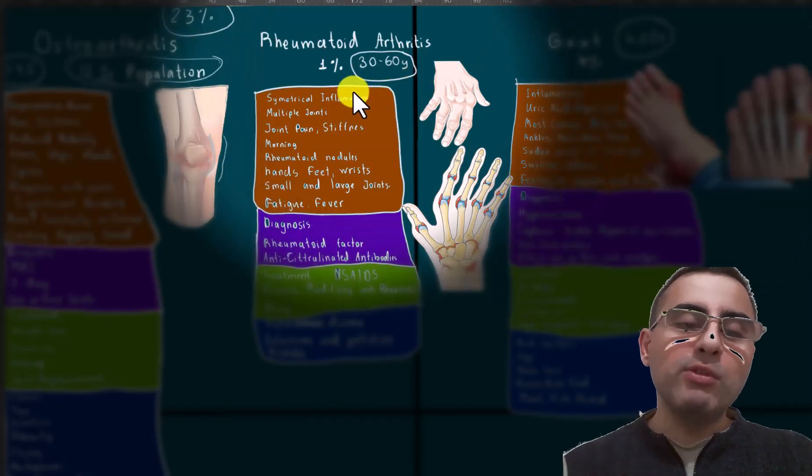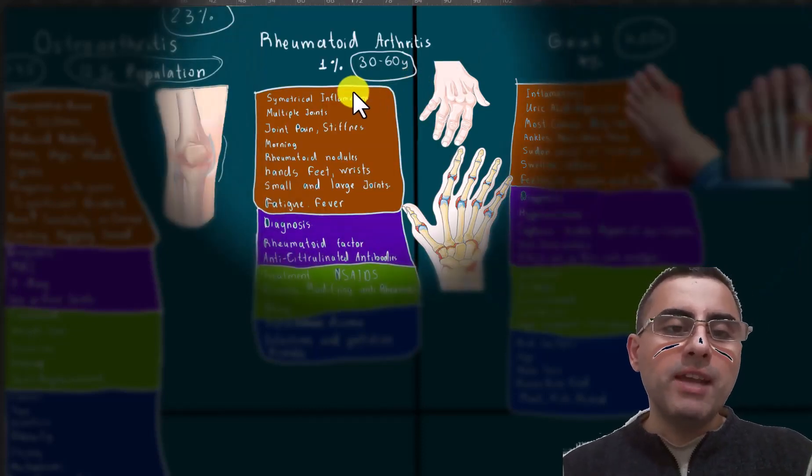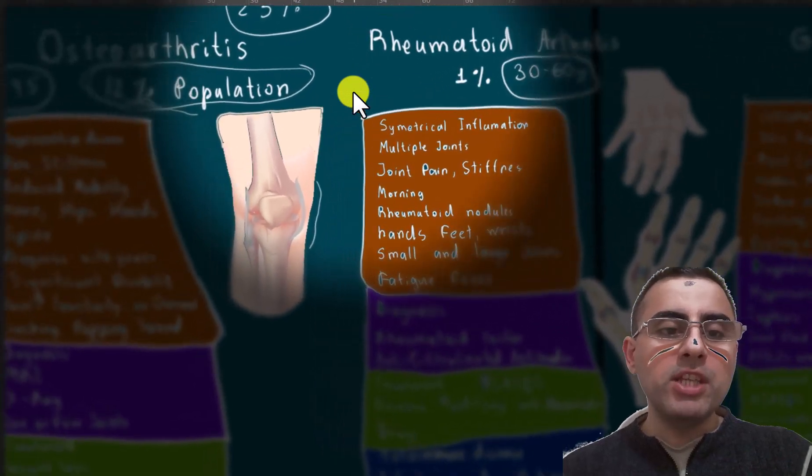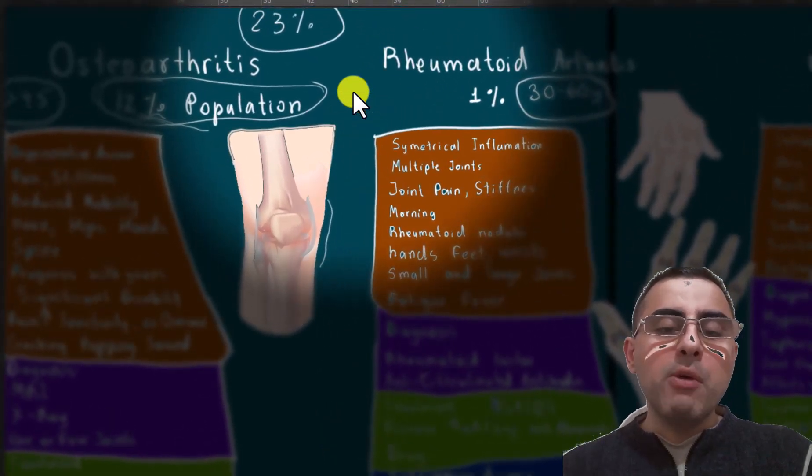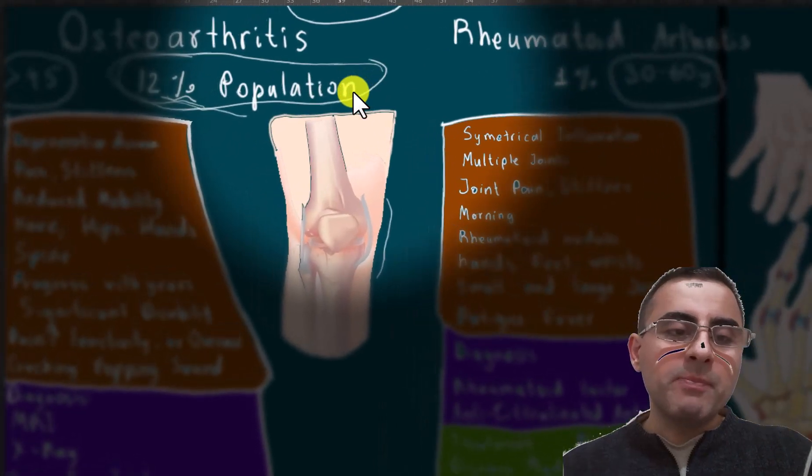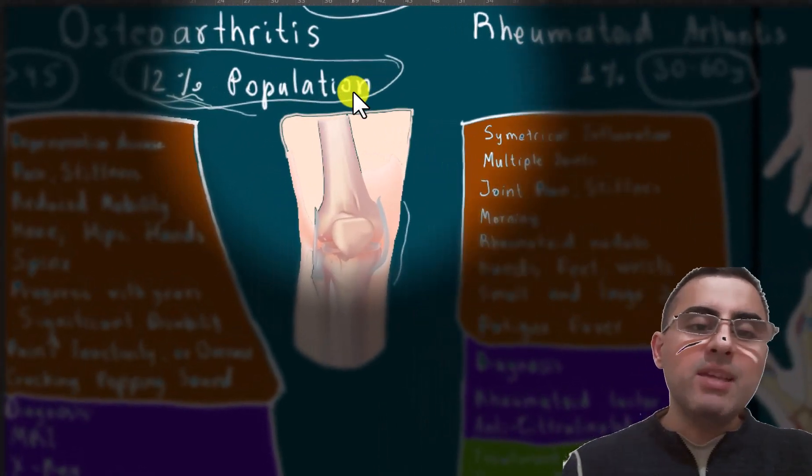Joint pain is one of the most common symptoms. It affects around 23% of the adult population and can be caused by a variety of conditions and diseases, but we will discuss the most common and most important ones. Osteoarthritis is the most common.